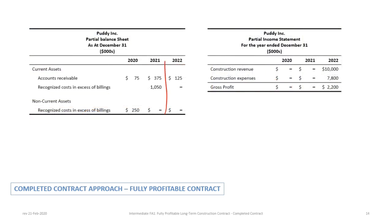For the final 2022 balance sheet, we have accounts receivable of $125,000 and no more costs in excess of billings. On the income statement, all of the revenue of $10 million and all of the costs of $7.8 million are recognized, and therefore all of the gross profit of $2,200,000 is recorded in 2022.